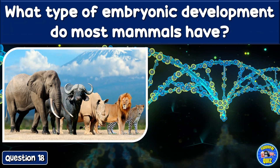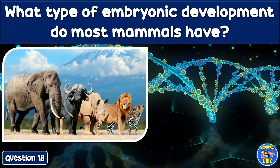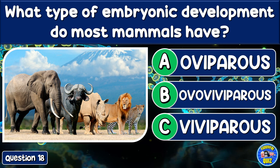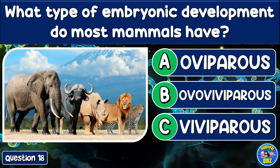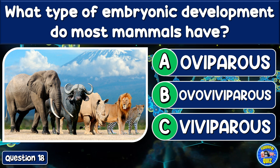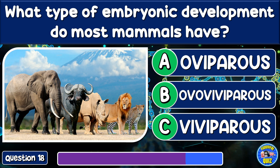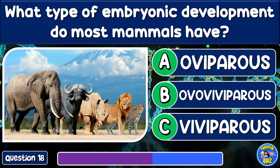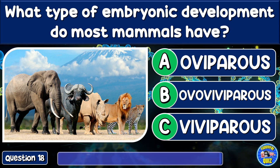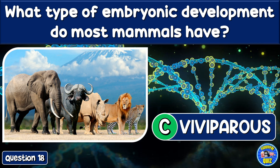What type of embryonic development do most mammals have? Oviparous, ovoviviparous, or viviparous? Viviparous.